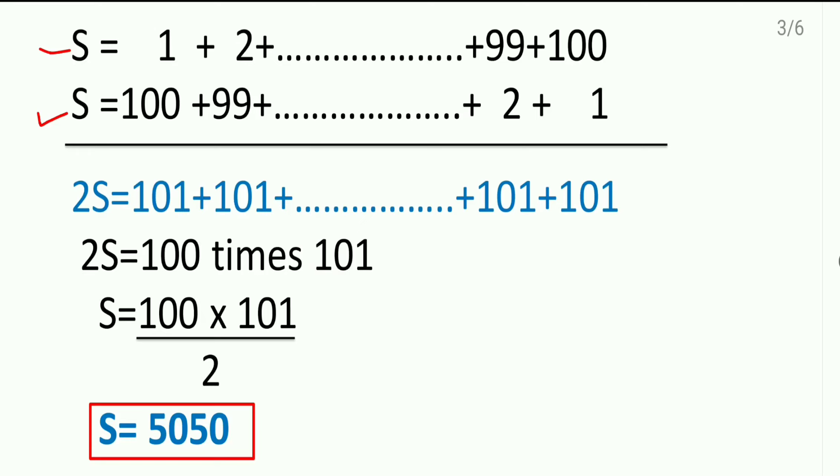And then he added both the equations. So, s plus s, it became 2s. And this 1 plus 100, it became 101. Look at the last term here. 100 plus 1, it became 101. But how many times 101? It came 100 times.